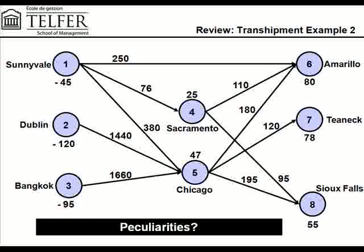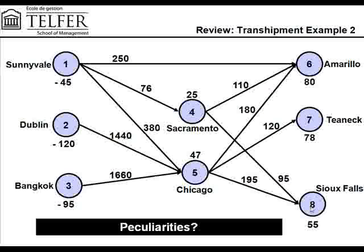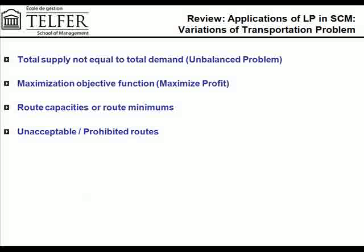The third thing to notice about the network is that not all routes are possible. Sunnyvale, for example, can supply directly to Amarillo and can supply to Sacramento and Chicago, whereas the other two plants in Dublin and Bangkok can only supply to those transshipment points and not directly to any of the demand nodes. Sacramento can only supply to Amarillo and Sioux Falls, but Chicago can supply to all three demand points. So there are some routes which are prohibited, and you need to take that into account when you formulate your solution.